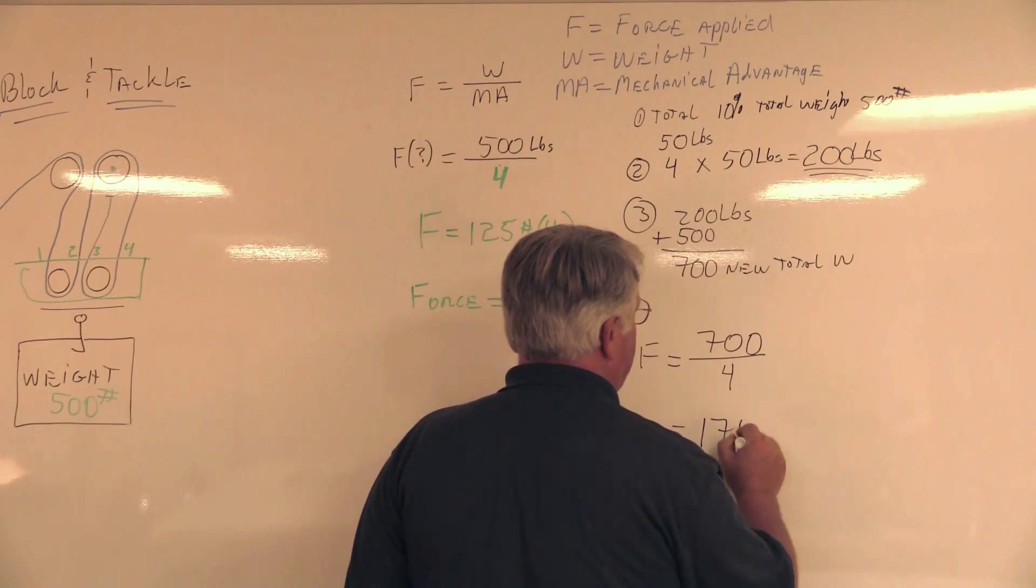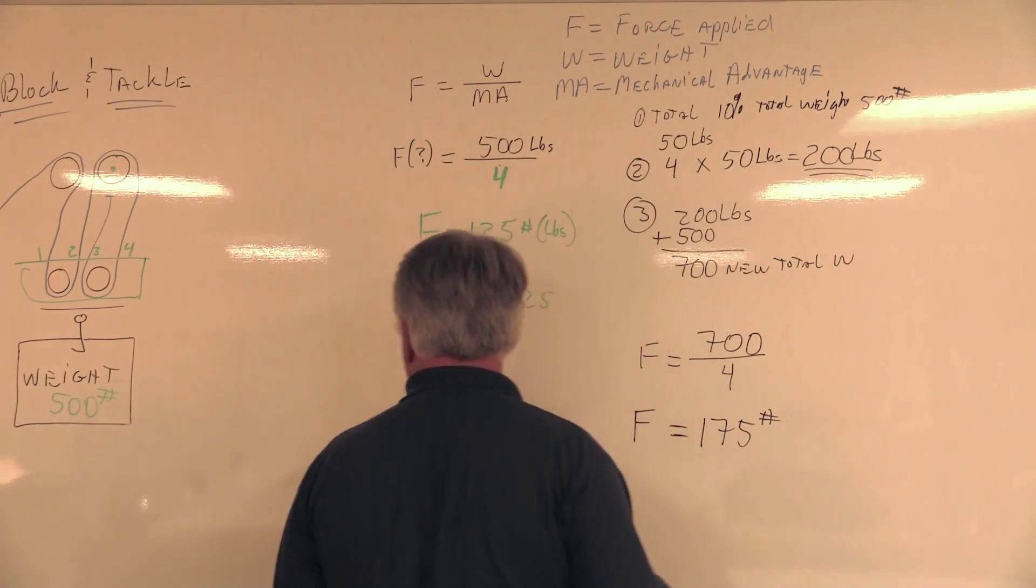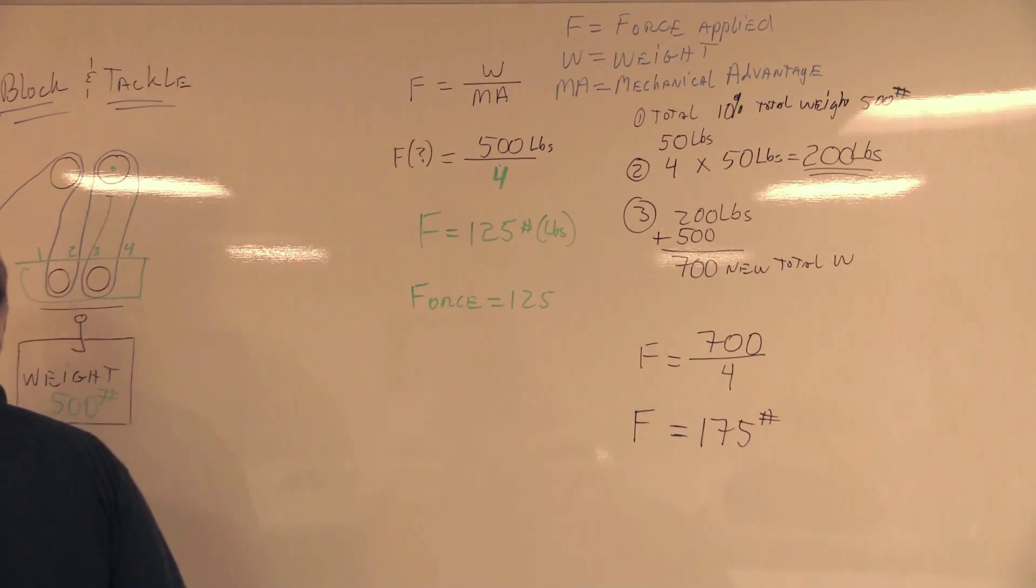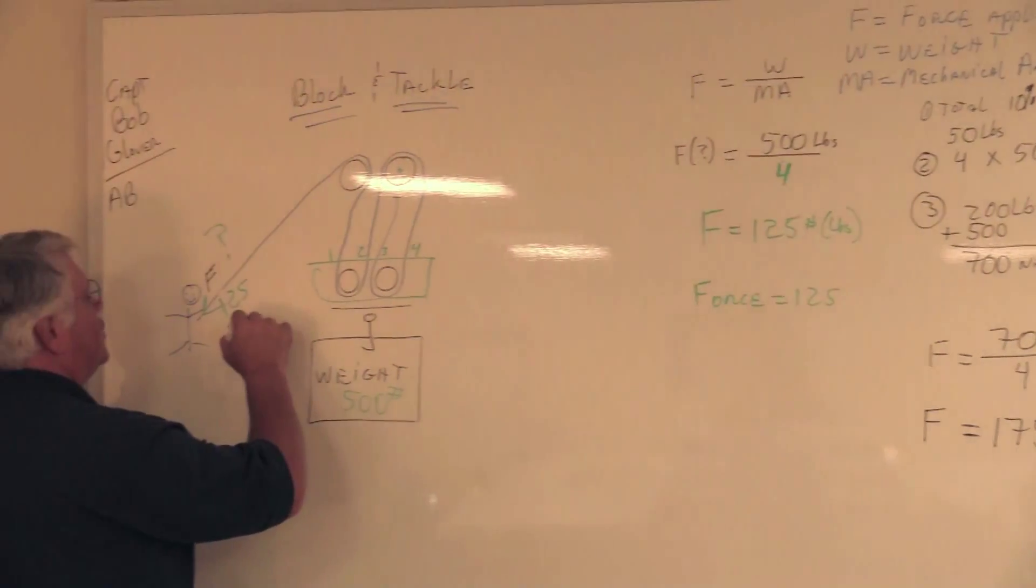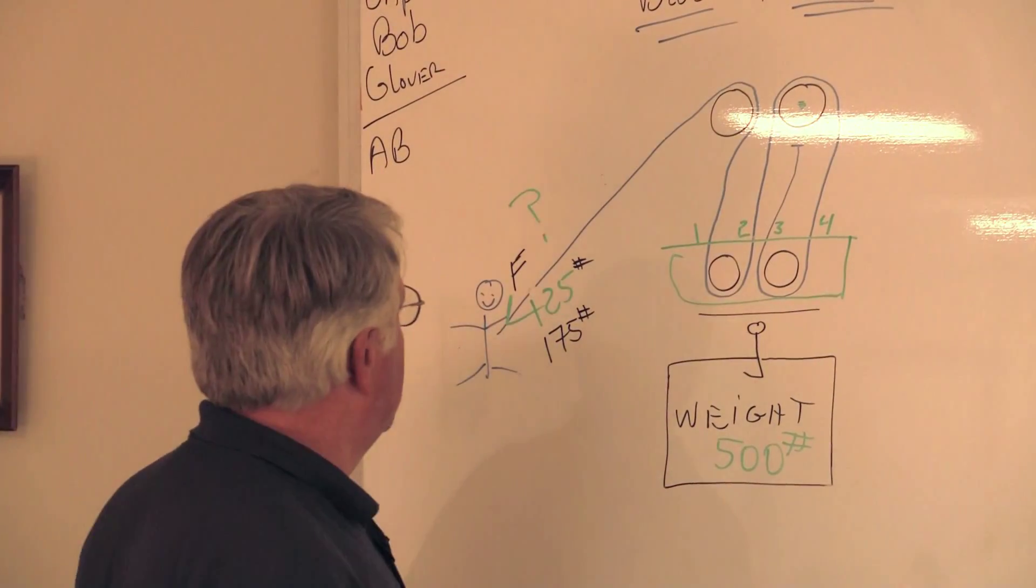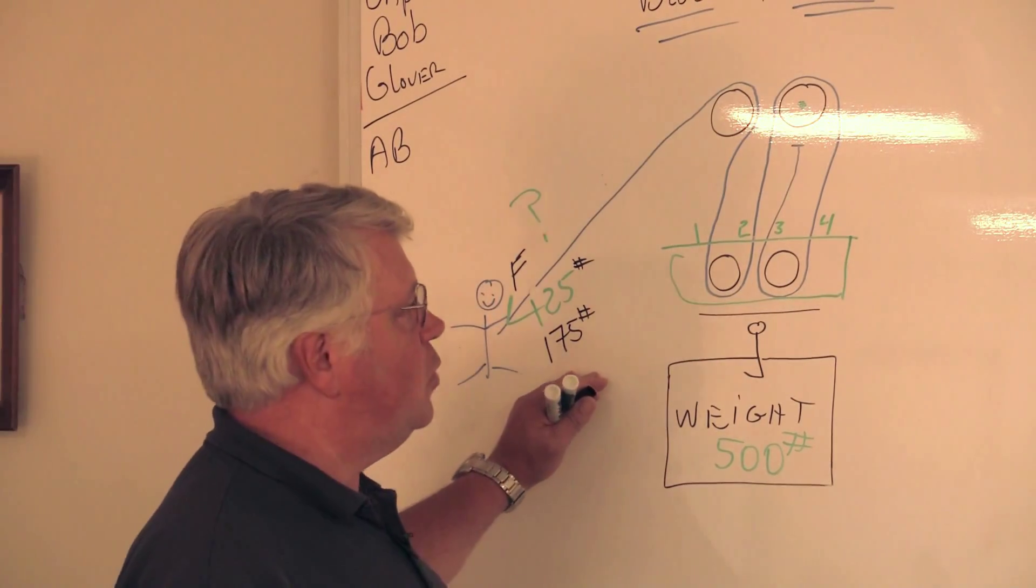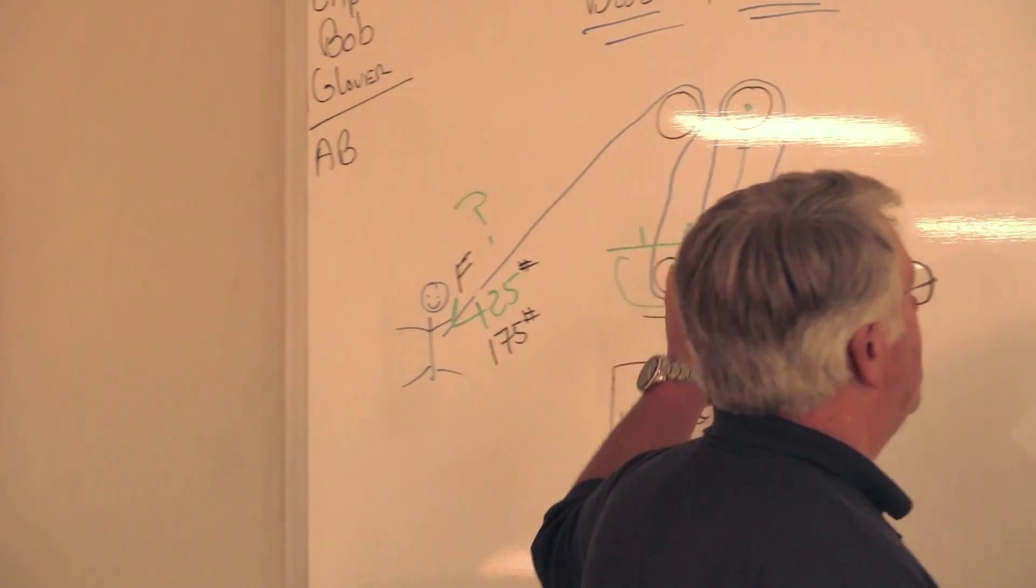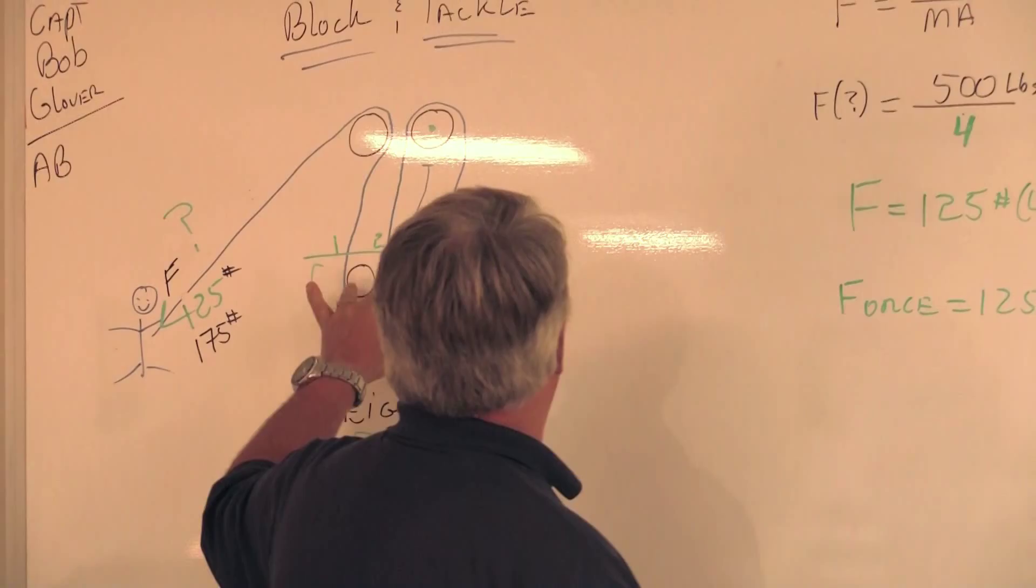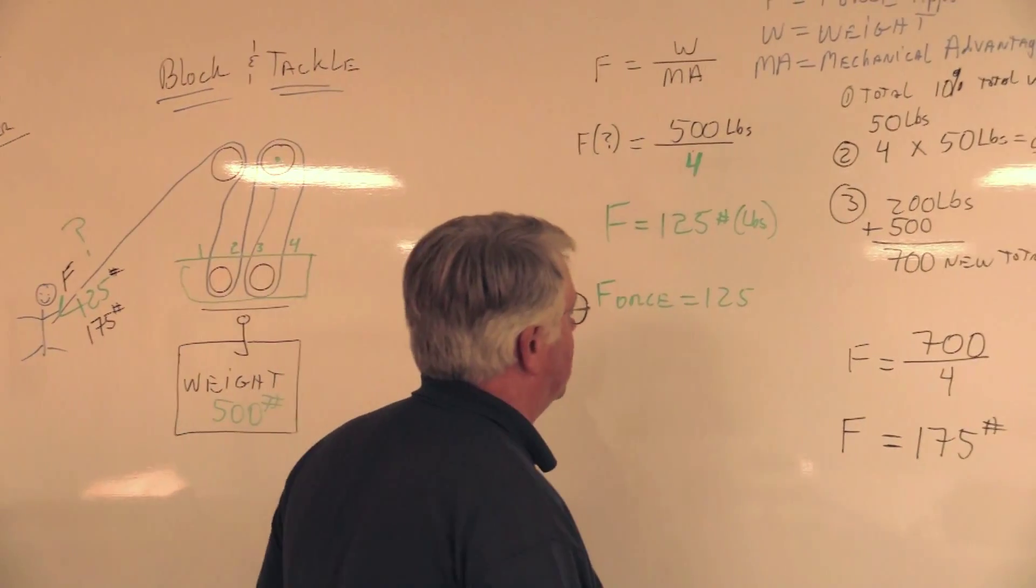So you can see that there was a significant increase in how much I've got to pull, OK, over here. Now I have to pull at 175 pounds versus 125 pounds because I've got to overcome the effects of friction. That's what we just calculated. We have to overcome the friction caused by each one of these shivs and the line rotating around the shiv.